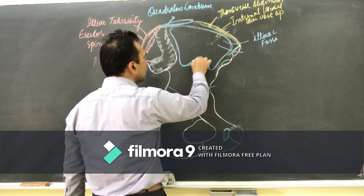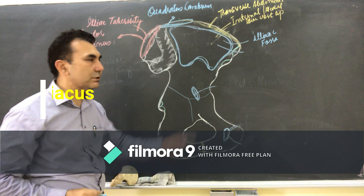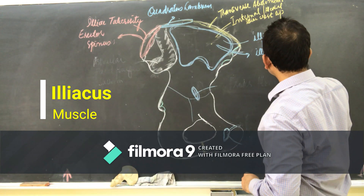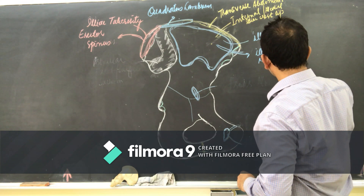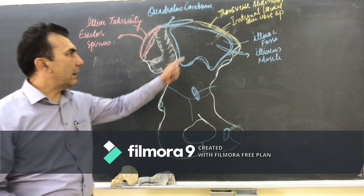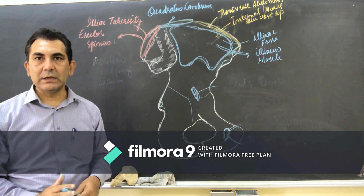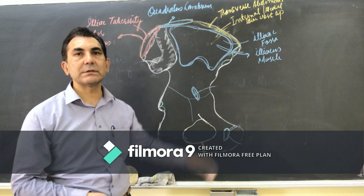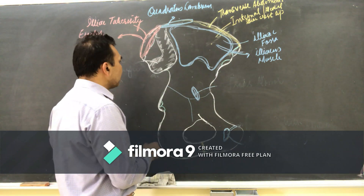The major portion of the iliac fossa is for the attachment of the iliacus muscle. The iliacus muscle is attached here, and this whole area of the iliac fossa is covered by a single muscle — the iliacus muscle.